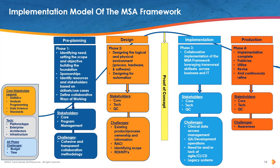Here are the phases of implementing the MSA framework model. It starts with pre-planning, design, implementation, and production. We have identified the considerations involved in each phase along with key stakeholders and challenges. The legend on the left groups the stakeholders into two buckets: core stakeholders and tech stakeholders, with additional stakeholders listed in each phase.